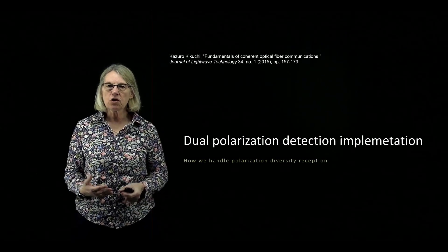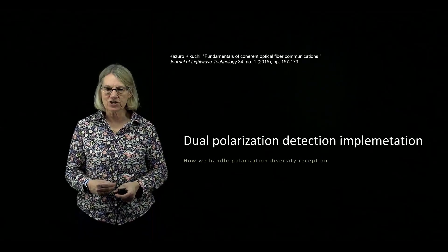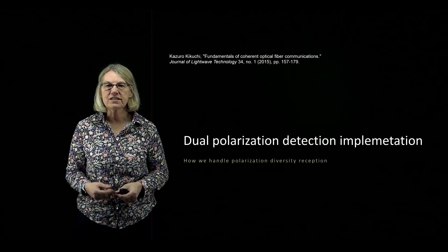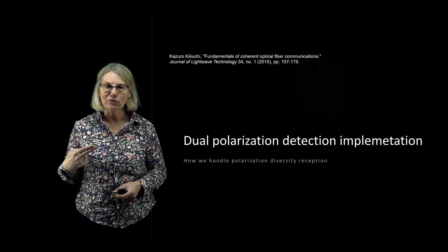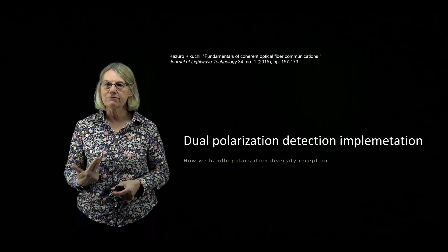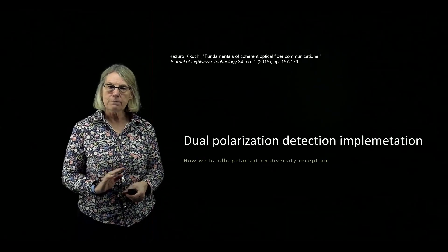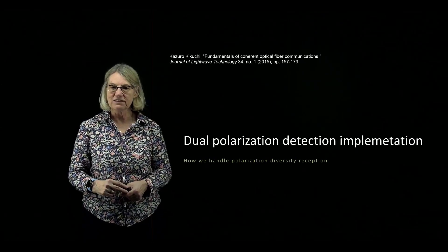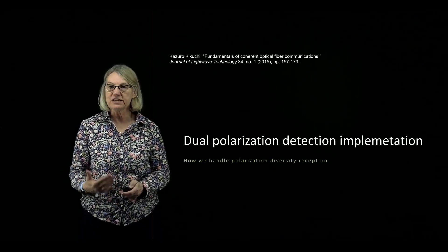We've seen how to implement coherent detection when sending information on a single polarization. One of the great advantages of coherent detection is the ability to send information not only on X polarization but also on Y polarization, exploiting both polarization states to double the information capacity of a fiber communications link. Now I'll be talking about how we implement dual polarization detection and how we create a polarization diverse receiver.